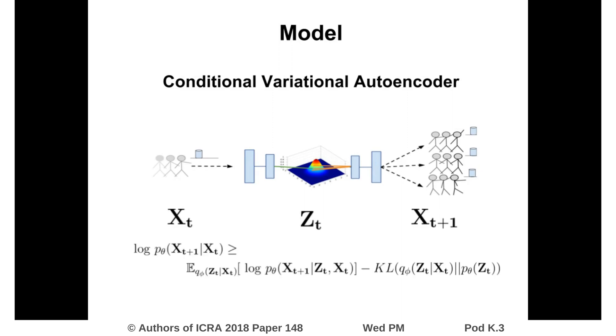Thus, we optimize the lower bound that consists of the data likelihood under the latent variables and the KL divergence between the encoding distribution and a prior.